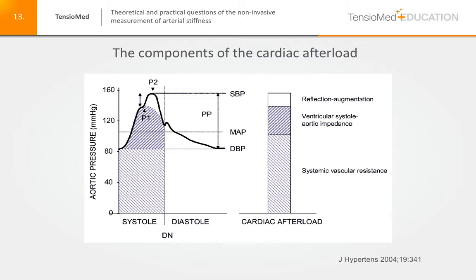Regarding the importance of the augmentation index and augmented pressure — the difference between the first and second systolic wave amplitudes — the higher the reflected augmented pressure, the higher the cardiac afterload. Systemic vascular resistance and the reflected augmented pressure play a fundamental role in cardiac afterload, so the increased augmentation index is essentially equivalent to increased cardiac afterload. In other terms, the higher the augmentation index, the greater the work that must be done by the left ventricle.